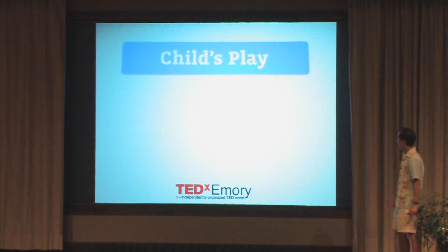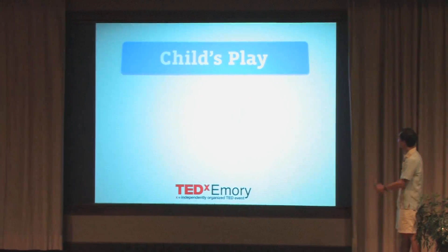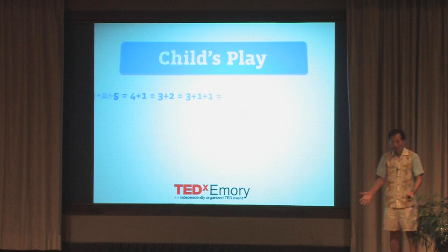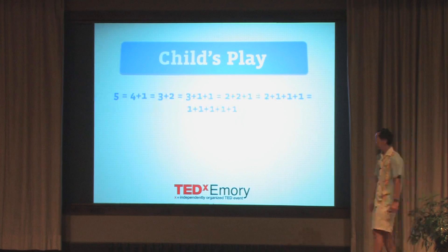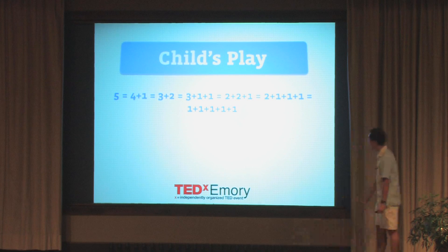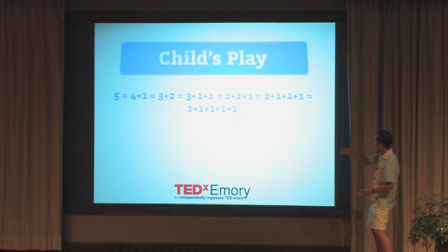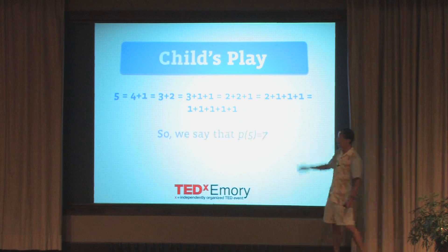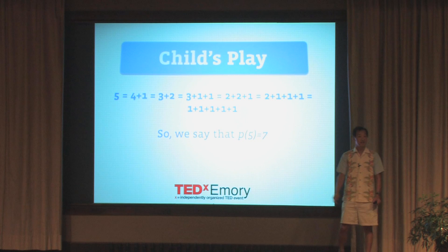Continuing with this child's play, we can go from four to five and do the same thing — write down all the ways in which you can add up numbers to get five. There are seven ways. So we say that P of five is seven. I'm starting with child's play: adding and counting.